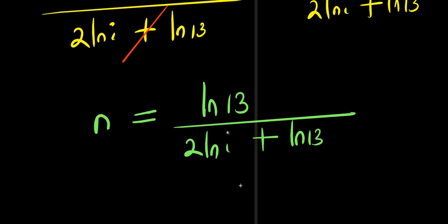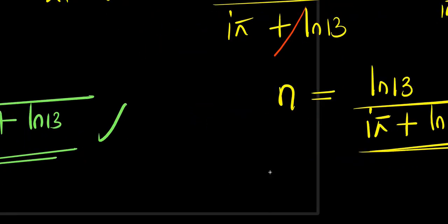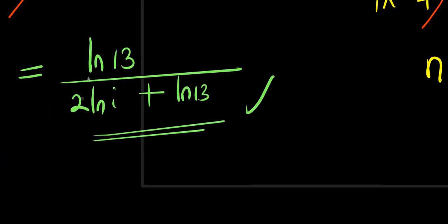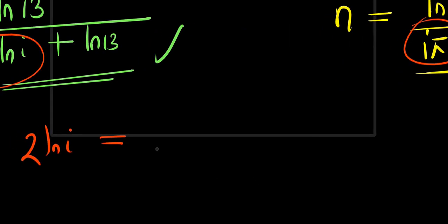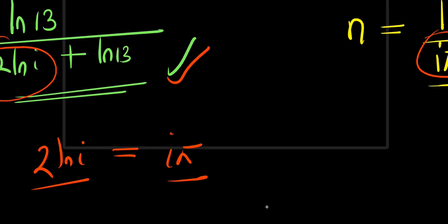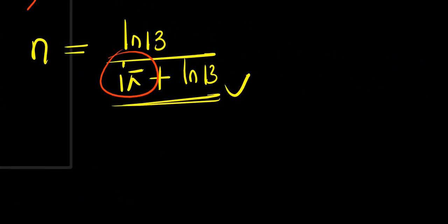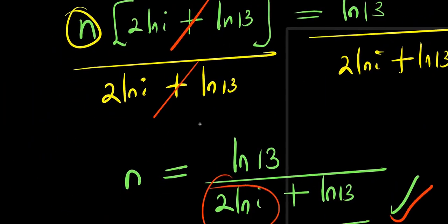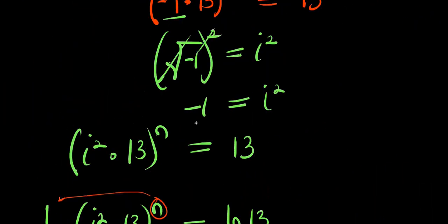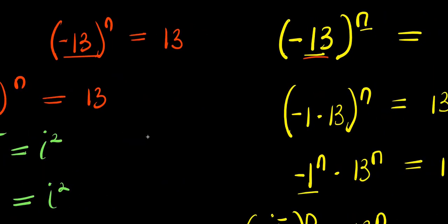This also becomes our answer. We now have this answer from Method 1 and this answer from Method 2 — they are both correct. What you should observe is that here we have 2 times natural log of i, which is exactly the same thing as i times pi. So both answers are the same, and this is how you can solve this exponential problem step by step depending on the method you want to use. Thank you and goodbye.